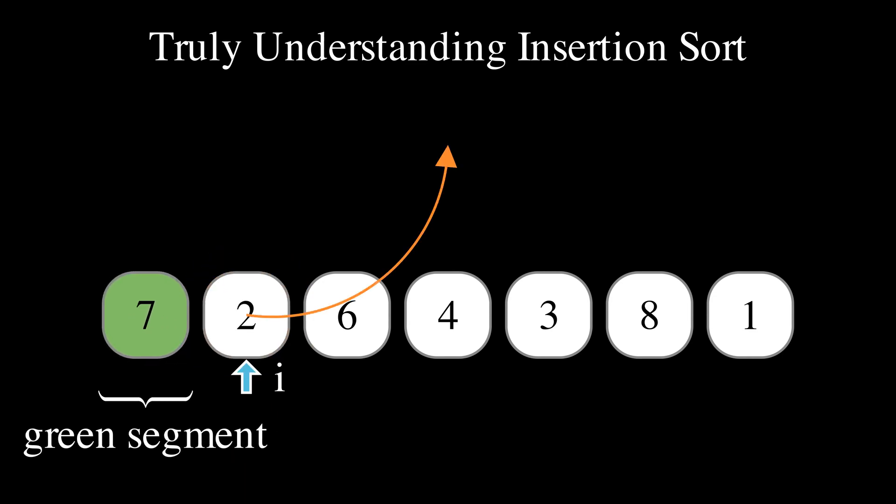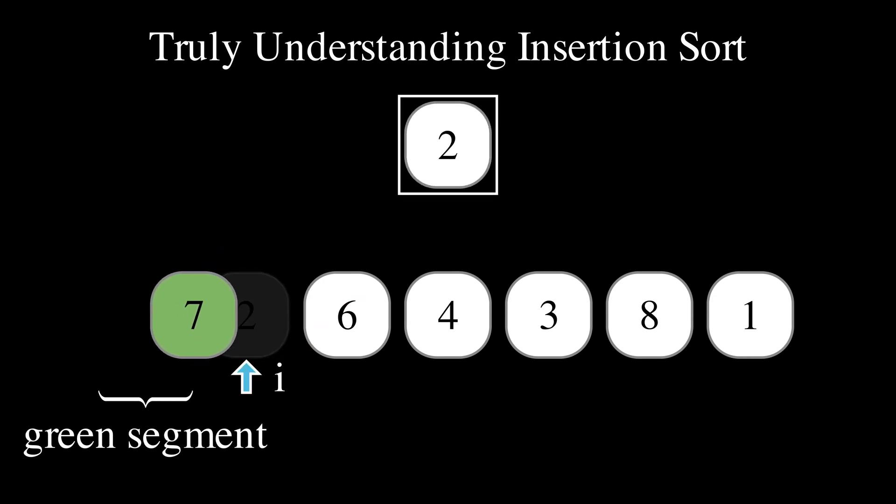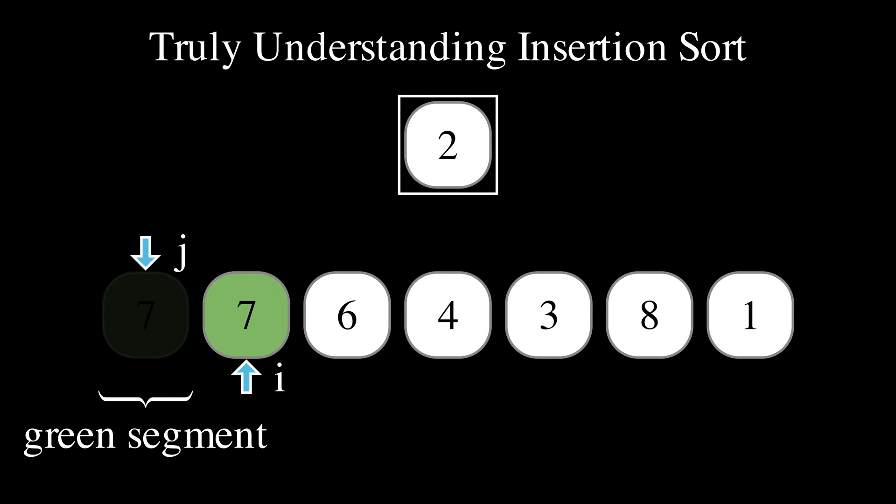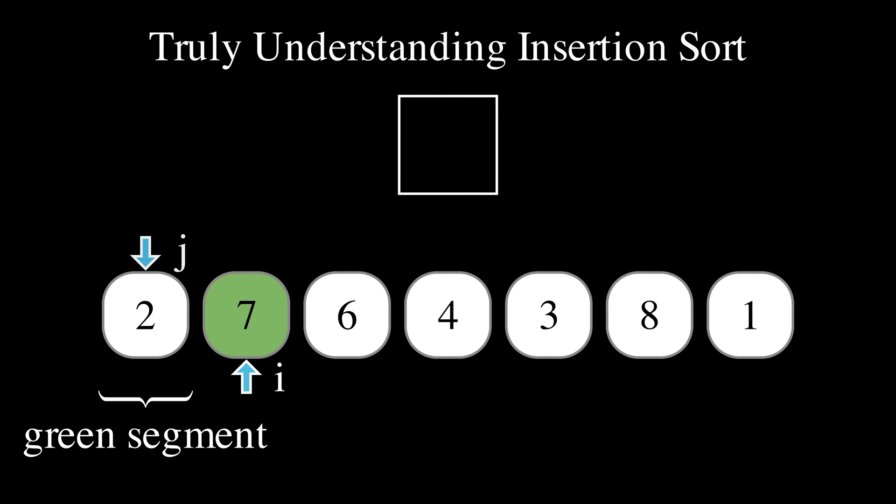We store the current element in a temporary location. We should now shift the elements larger than the current element to the right. We keep track of the position into which to shift the larger elements by using another pointer called j. As long as the element just before j is larger than the current element, we shift it into position j and decrease j. Once j has finished iterating over all elements larger, we insert the current element. We forget about j, increase i, and repeat the entire process.